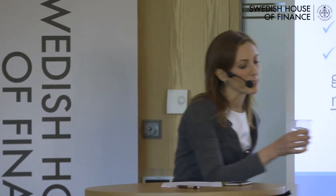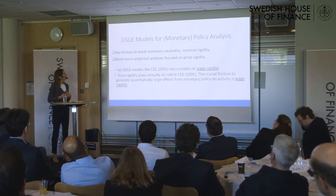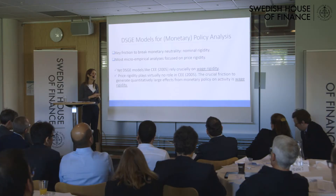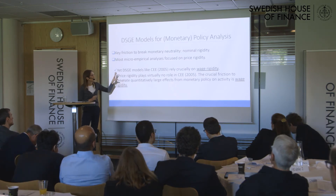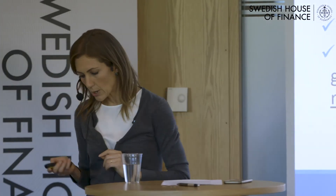Let me now turn to DSG models used for monetary policy analysis. The key friction that breaks monetary neutrality in these models is nominal rigidity. Interestingly, most micro studies on nominal rigidity have focused on price rigidity. However, in models like Christiano, Eichenbaum, and Evans, the key rigidity that has quantitative bite is wage rigidity — price rigidity does virtually nothing in those models. In order to get quantitatively large effects of monetary policy on real activity, you need wage rigidity. So I'll talk today about wage rigidity, drawing on work I've done with Giovanni Olivei at the Boston Fed.